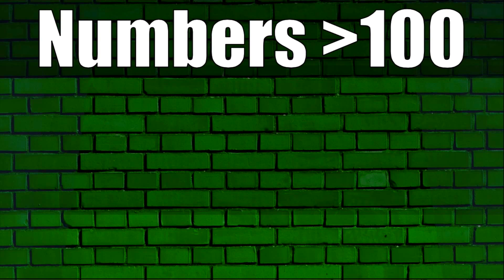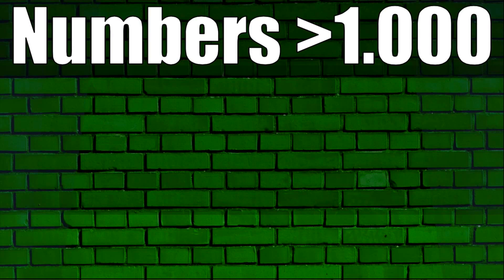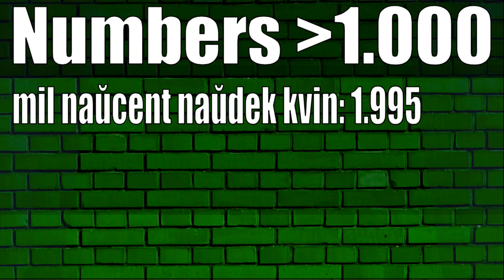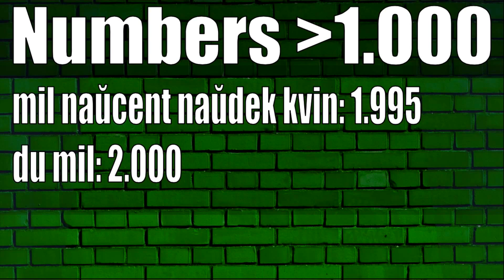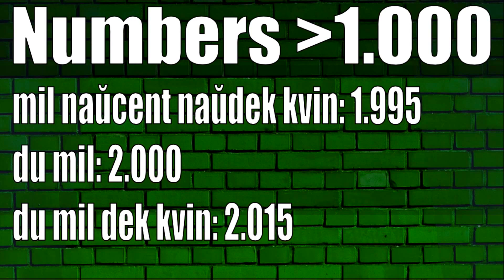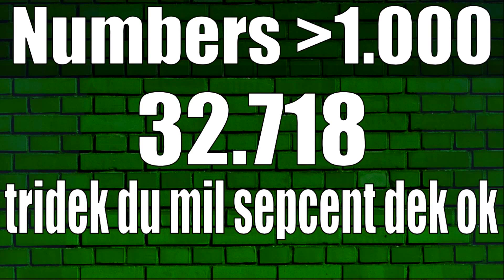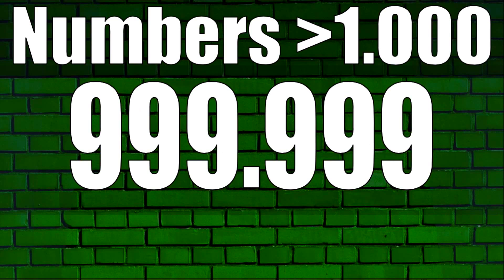The Esperanto word for one thousand is mil. Unlike multiples of ten and one hundred where there's no space, you do need a space when representing multiples of one thousand. For example: mil naucent naudek kvin 1,995. Du mil 2,000 — notice the space between du and mil. Du mil dek kvin 2,015. Tridek du mil sepcent dek ok 32,718.